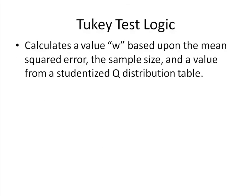So, the logic behind a Tukey test goes as follows. It calculates a value that's denoted as W that's based upon the mean squared error, which is something that you should be familiar with through your ANOVA calculations, sample sizes, and values from what's called a studentized Q distribution table. So, the Q distribution is just another distribution that we'll be using.